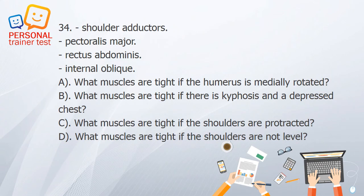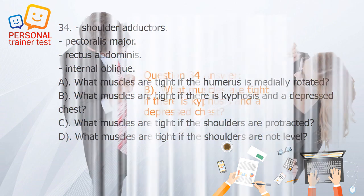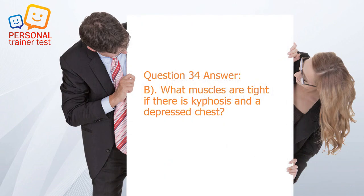Question 34. A. What muscles are tight if the humerus is medially rotated? B. What muscles are tight if there is kyphosis and a depressed chest? C. What muscles are tight if the shoulders are protracted? D. What muscles are tight if the shoulders are not level? Answer: B. Shoulder adductors, pectoralis major, rectus abdominis, and internal oblique are tight if there is kyphosis and a depressed chest.